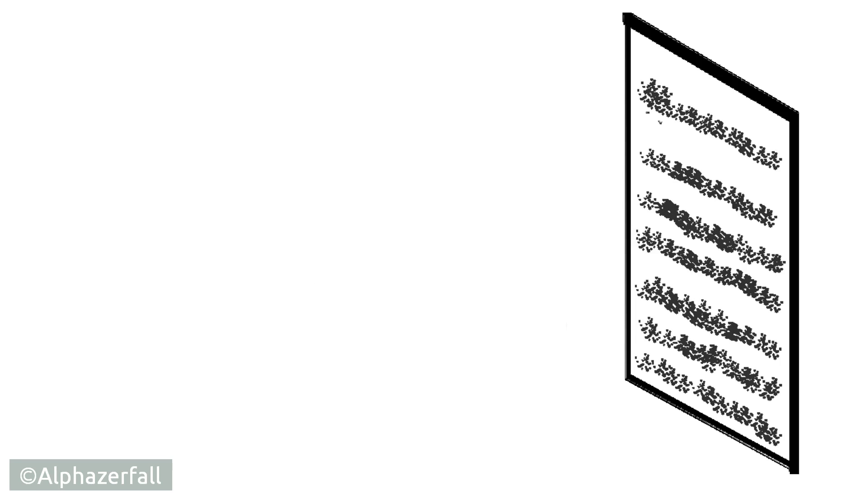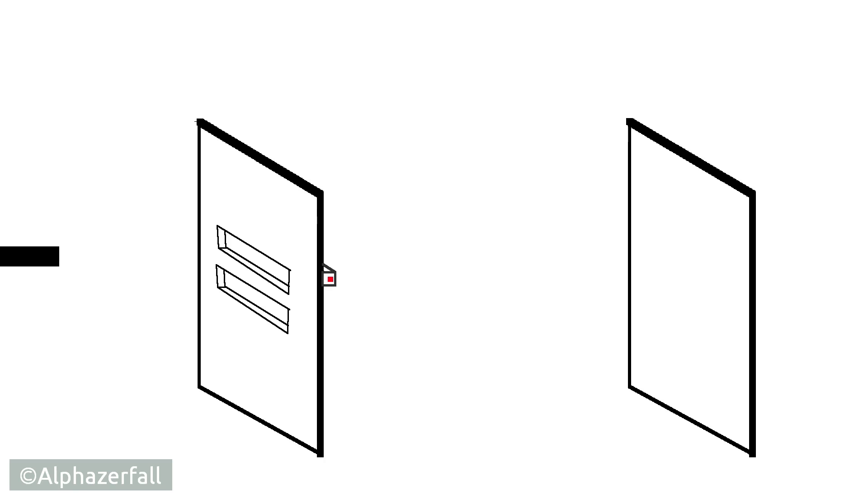But why don't we see the pattern of interference if we mount a detector at the wall? The reason is that we already observe the electron at the first wall, so the electron already has to decide at this point where it traveled through. Caused by this forced decision it cannot interfere with itself anymore.